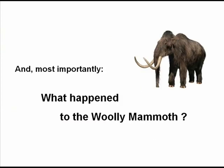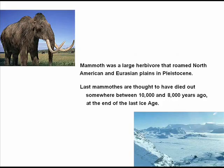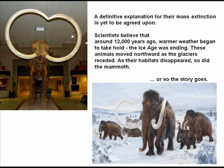What happened to the woolly mammoth? The mammoth was a large herbivore that roamed North American and Eurasian plains in the Pleistocene. The last mammoths are thought to have died out somewhere between 10,000 and 8,000 years ago, at the end of the last Ice Age. Scientists believe that around 12,000 years ago, warmer weather began to take hold, the Ice Age was ending, and these animals moved northward as the glaciers receded. As their habitats disappeared, so did the mammoth.